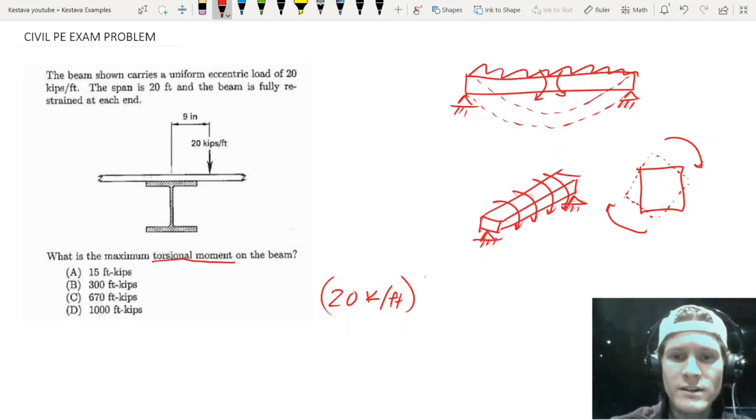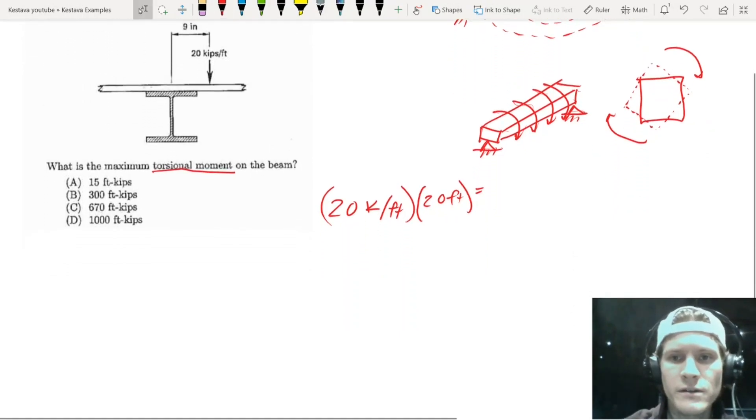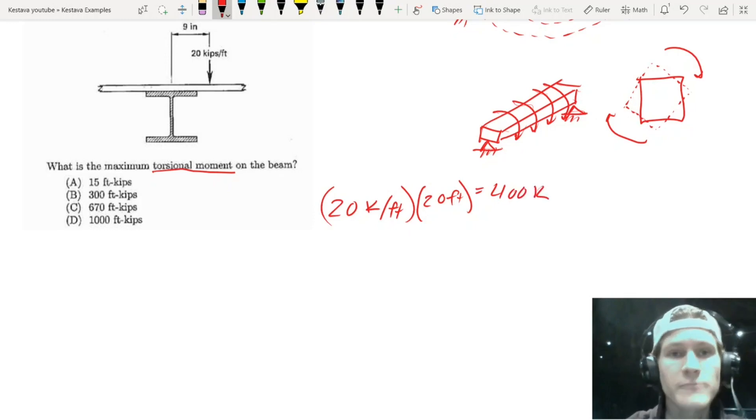That is going to equal, I'm going to scroll down a little bit, not sure if my screen's blocking, that's going to equal 400 kips, right? Along the entire length of the beam.